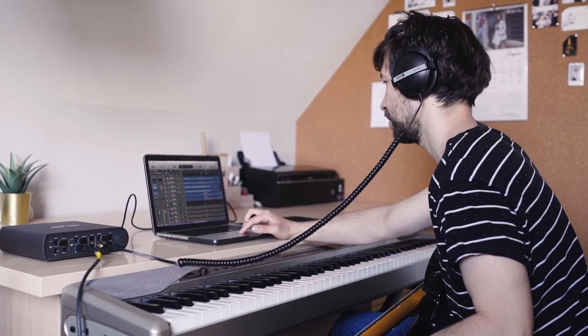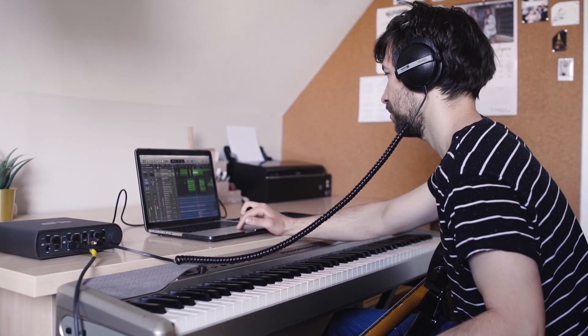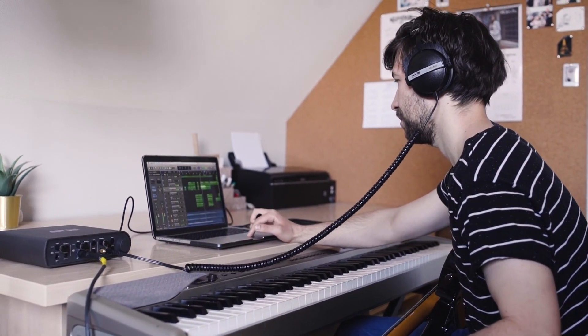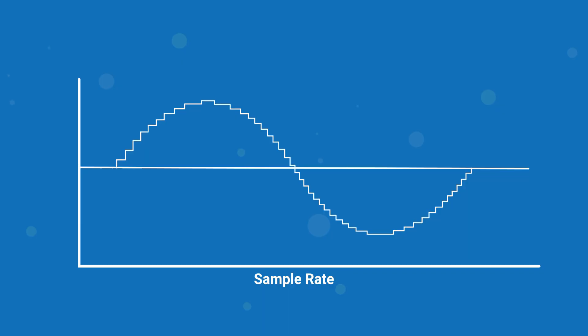To wrap up sample rate, you can think of it like snapshots per second — how many times per second are we asking our computer to describe the incoming audio signal? Bit depth, on the other hand, is the other axis of our audio signal.